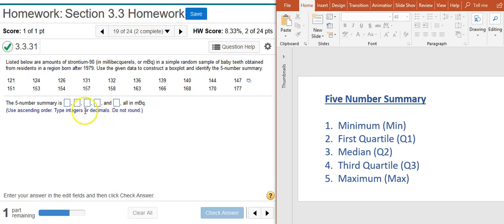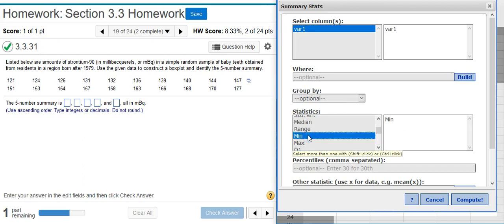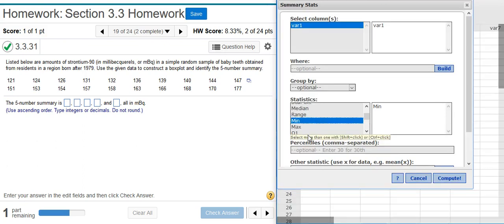In order to put the answers in the proper order I'm going to list them in the proper order when I calculate them in StatCrunch. So the first one I want to select is the min. So I come down to select the min, and then pressing the control button and keeping it pressed on my keyboard, I'm going to select the next four numbers for my five-number summary. So after the min we have the first quartile, and then the median.